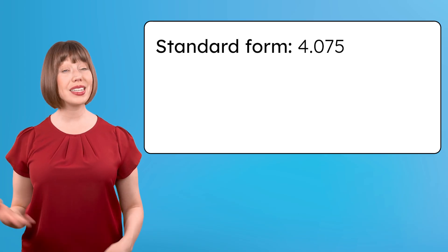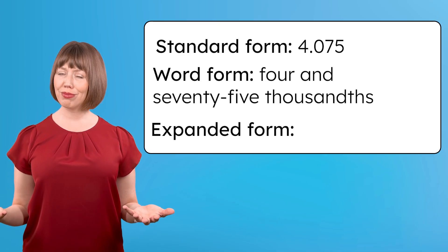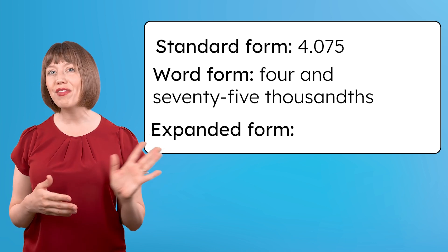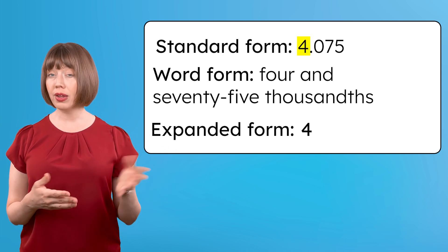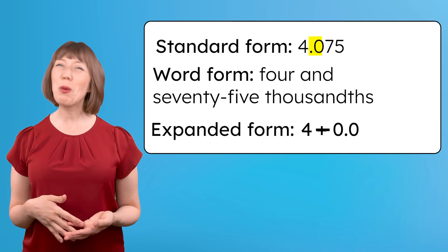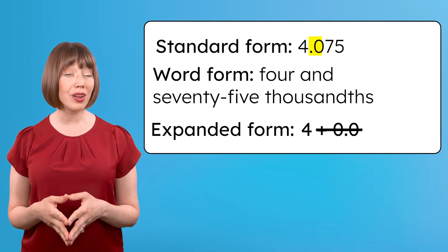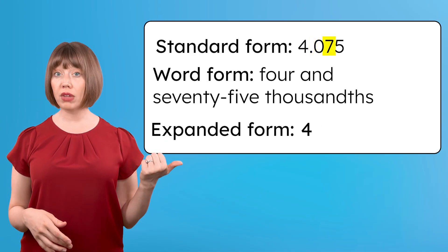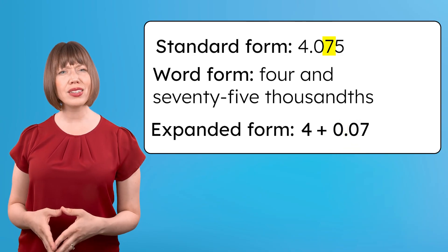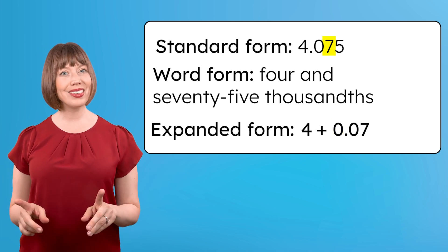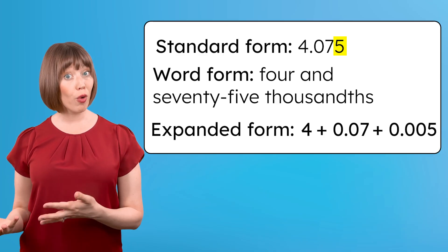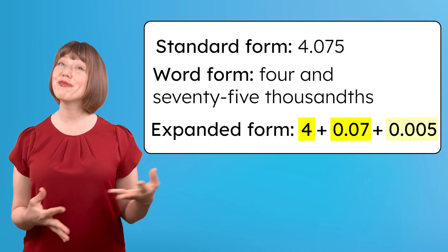So we can represent decimals in standard and word forms. What about expanded form? How do we decompose a decimal into all of the individual place values? Let's try with four and seventy-five thousandths. In the ones place there's a four. In the tenths place there's a zero — do we need to record plus zero? Nope! Adding zero tenths doesn't change the value of the number, so we don't need to include it. There's a seven in the hundredths place, so we add seven hundredths to the expanded form. The decimal can't stand alone, so notice how we use a placeholder zero in the ones place. And to record the five in the thousandths place, we add five thousandths. So the expanded form of four and seventy-five thousandths is four plus seven hundredths plus five thousandths.